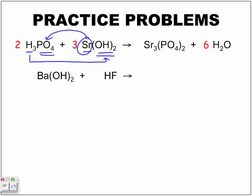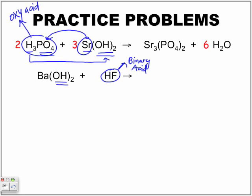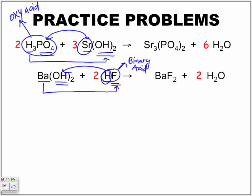Next equation: barium hydroxide and hydrofluoric acid — a binary acid. We have our base here. The metal from the base is going to combine with the non-metal from the acid, and the hydrogen is going to combine with the hydroxide to form the water. The other pairing forms our salt. In the end we have barium fluoride and H2O. The last step is to balance the equation using the appropriate coefficients.